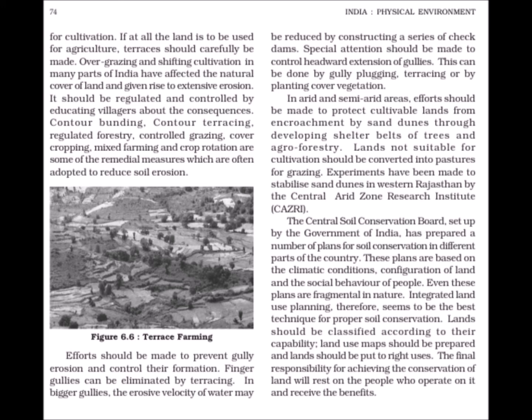If at all the land is to be used for agriculture, terraces should carefully be made. Overgrazing and shifting cultivation in many parts of India have affected the natural cover of land and given rise to extensive erosion. It should be regulated and controlled by educating villagers about the consequences. Contour bunding, contour terracing, regulated forestry, controlled grazing, cover cropping, mixed farming and crop rotation are some of the remedial measures which are often adopted to reduce soil erosion.